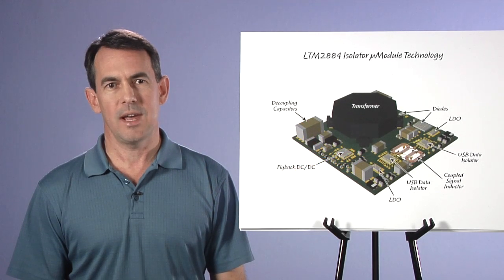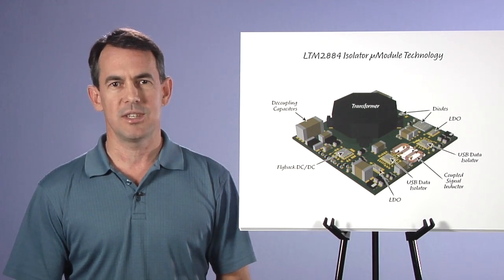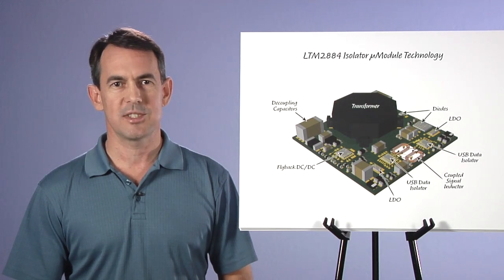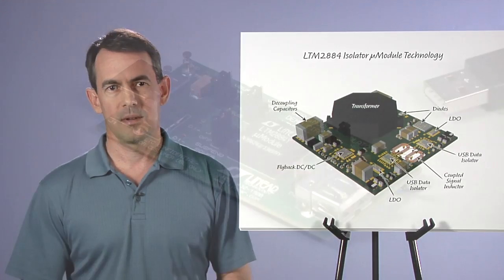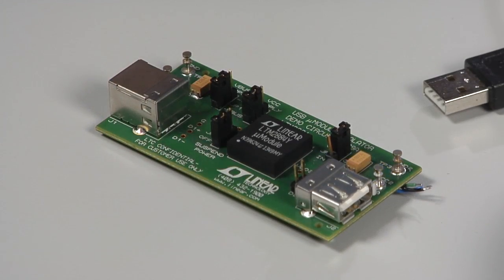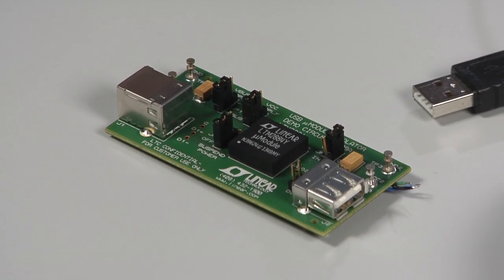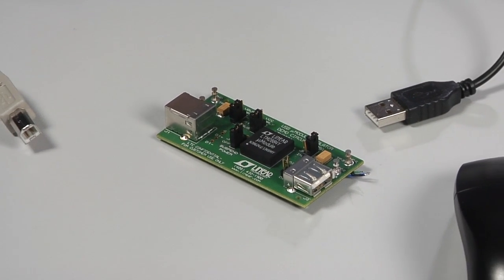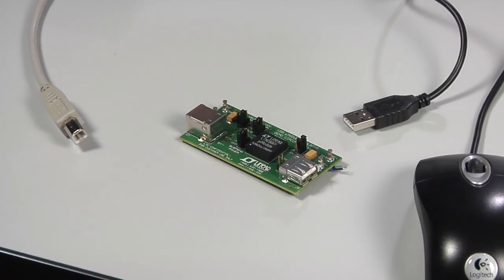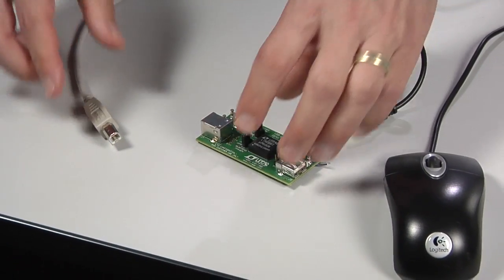Now we'll head into the lab, and I'll demonstrate the LTM2884's operation and robustness, and we'll observe the rest of its features along the way. Here I have the LTM2884 demo board, the DC1789A, which includes the micro module plus connectors. I simply connect the demo board to my computer's USB port, and then connect a USB mouse to the isolator board.